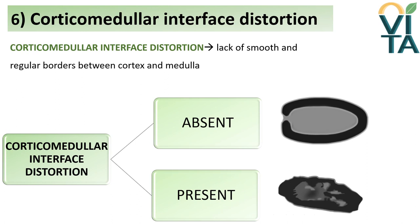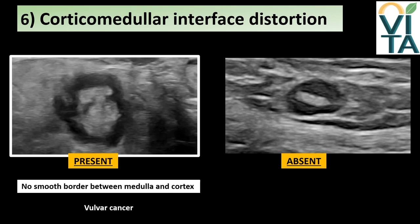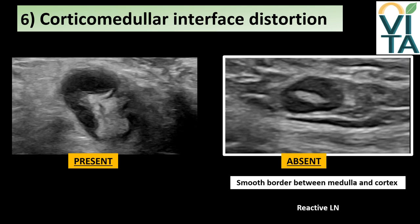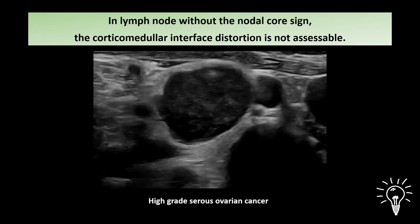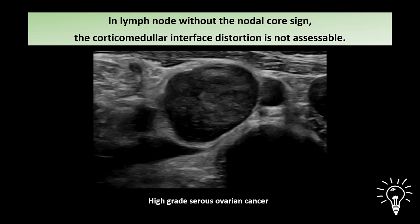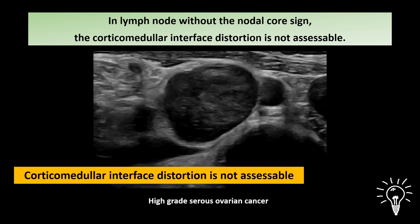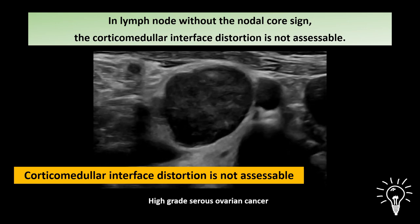Corticomedullary interface distortion is defined as the lack of smooth, regular borders between cortex and medulla. It can be present or absent. The corticomedullary interface is clearly distorted in a metastatic lymph node from a patient with vulvar cancer, while a reactive lymph node shows smooth borders between medulla and cortex. Importantly, corticomedullary interface distortion cannot be assessed if the nodal core sign is absent — in this lymph node without nodal core sign due to infiltration from high-grade serous ovarian cancer, it is classified as not accessible.